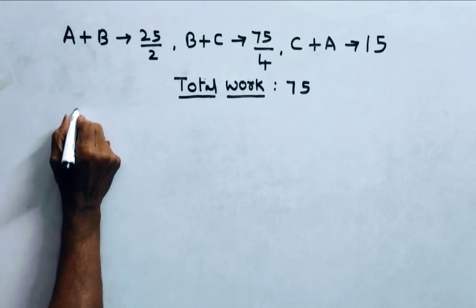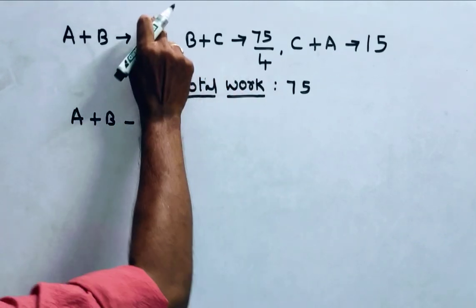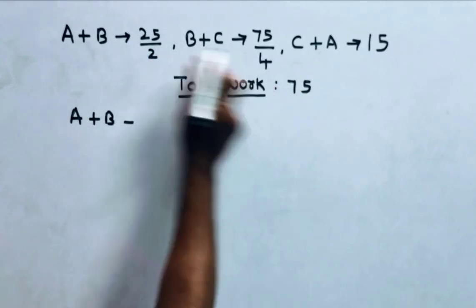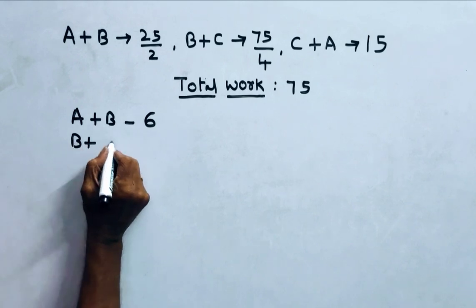Then A plus B, A plus B can do, A plus B can do 75 by 25 by 2 that is 25, 3 is 3, 2 is 6 units per day.